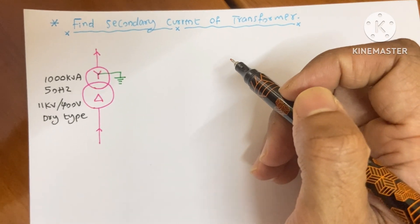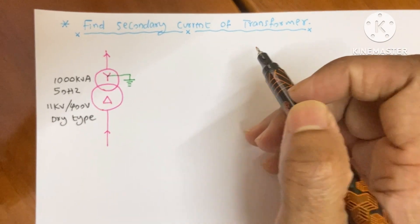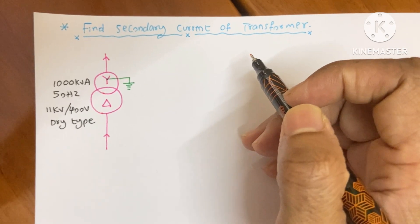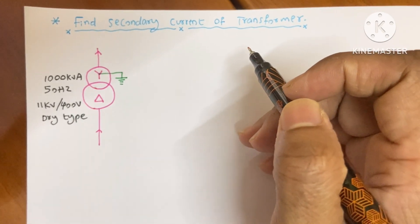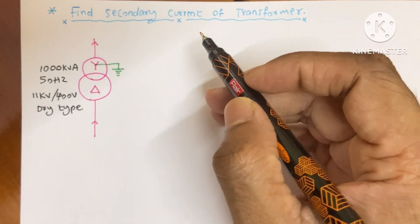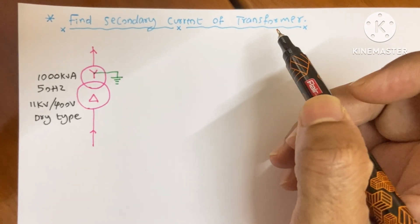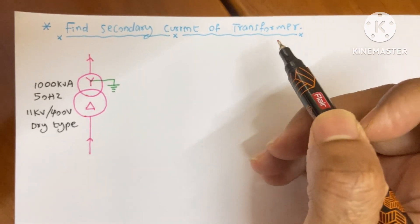Today I am going to discuss a trick about how to find the secondary current of a transformer within two seconds.